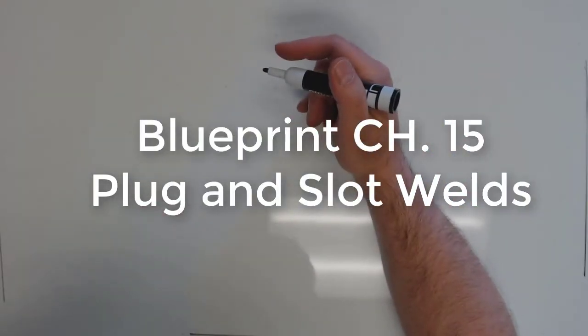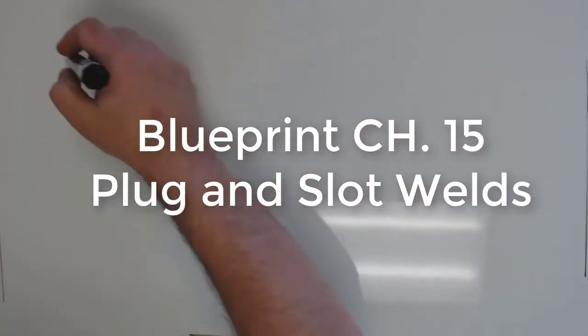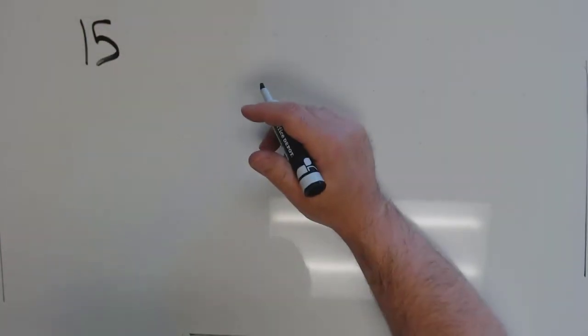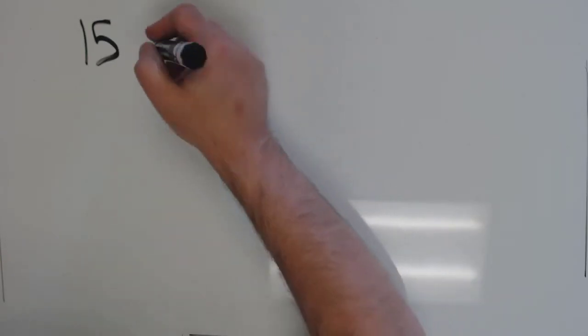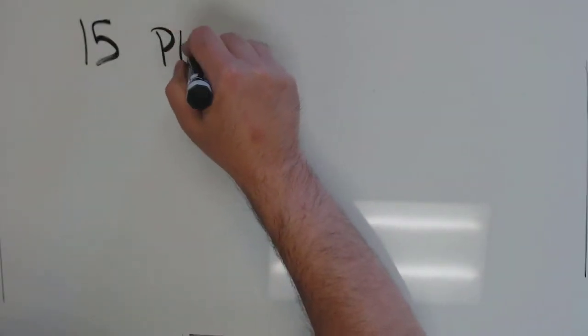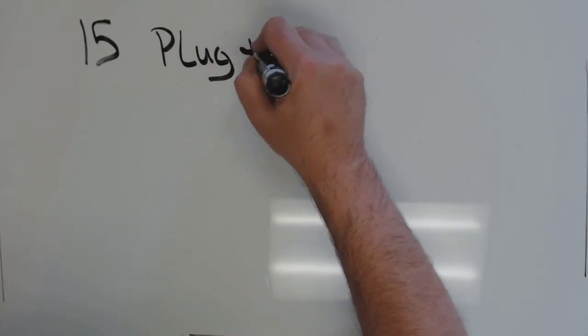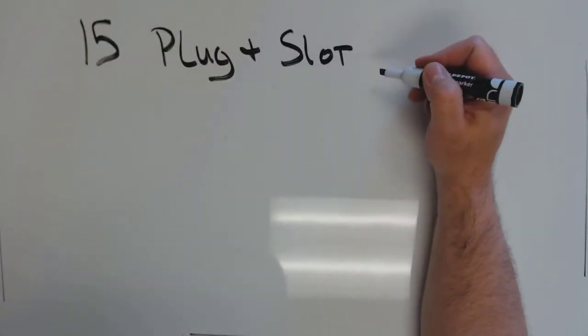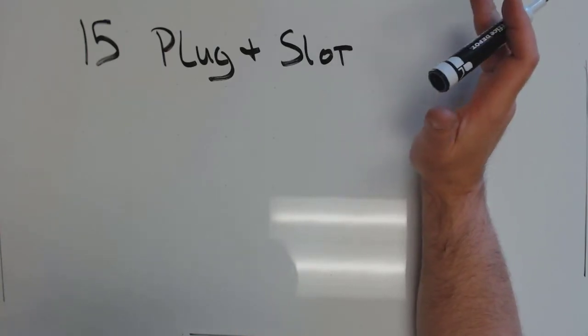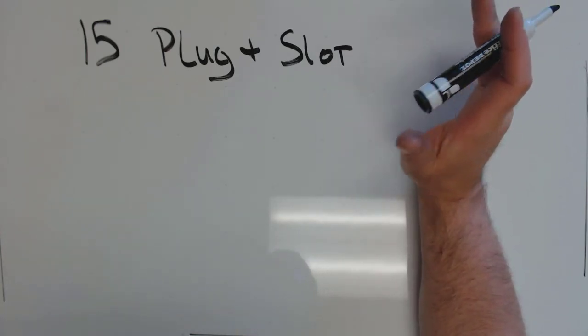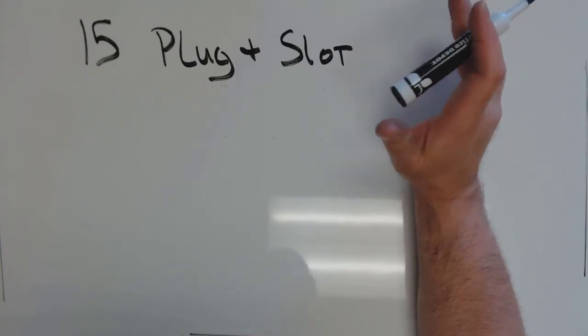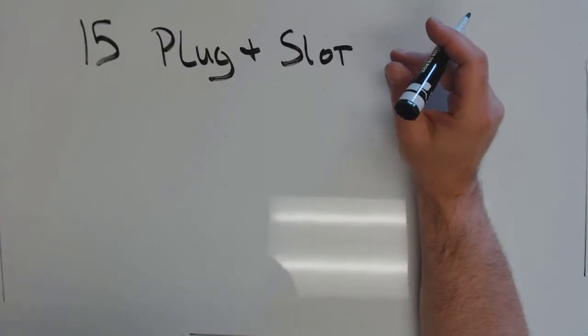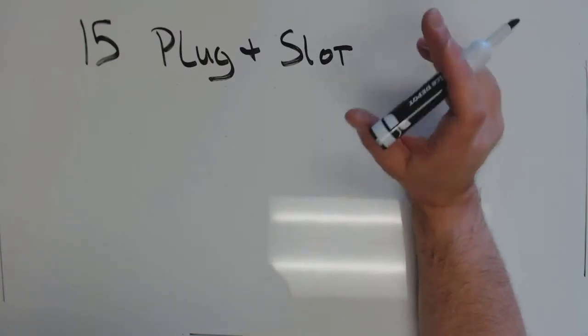Hello and welcome to this week's lesson. This is going to be chapter 15 in our blueprint book on plug and slot welds. Plug and slot welds are something that nobody talks about. You're never going to see pictures of them on Instagram, but they're one of those things that once you start using them, you realize how invaluable they are. They're just a really good tool to have in your bag of tricks when you're doing welding. So they really don't get the respect they deserve.